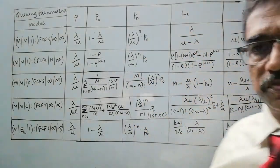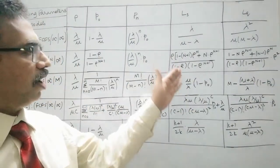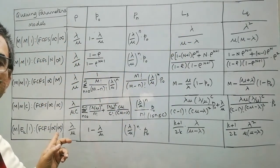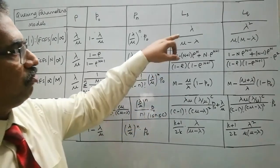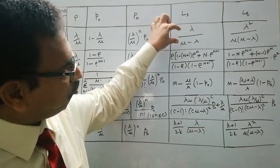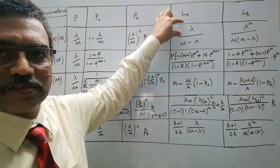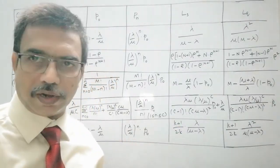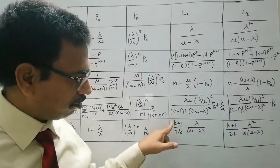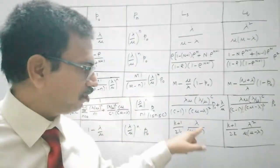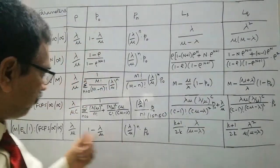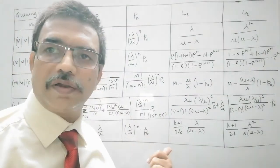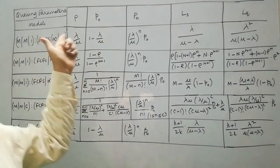Similarly, Ls and Lq, for these we have some lengthy formulae, like this, for Ls and Lq, whereas for single-server model and the multi-stage model, if you observe, the difference is that here you find λ/(μ-λ) for Ls, whereas here it is (k+1)/(2k) × λ/(μ-λ). If you substitute k equal to 1, then (1+1)/(2×1), this term vanishes and you will have only λ/(μ-λ). All relations that are derived for the multi-stage model, if you substitute k equal to 1, it is equivalent to the single-server model.